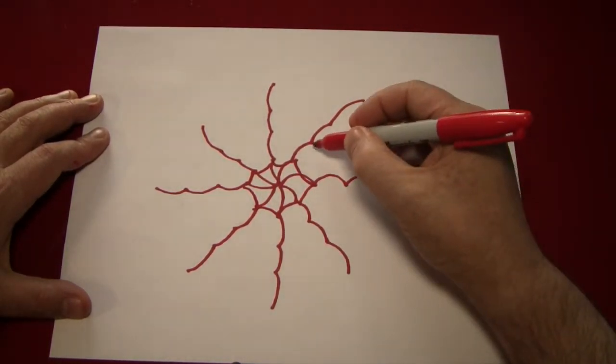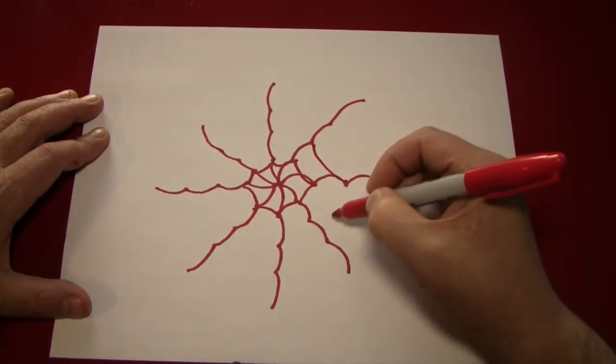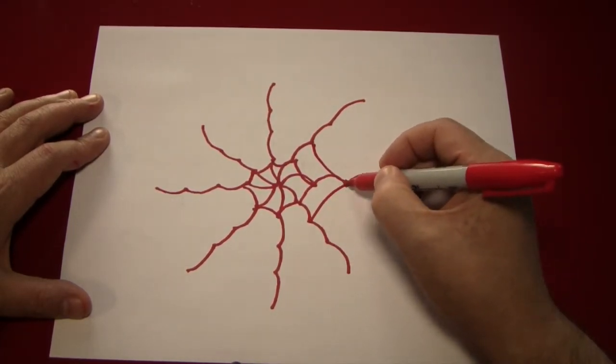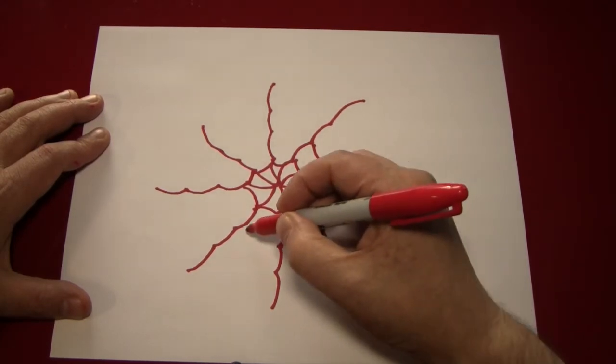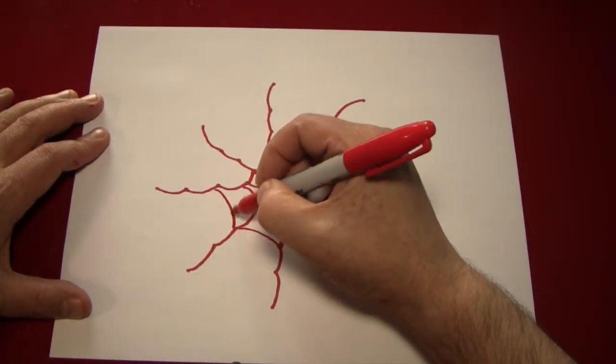So, you'll take a point like this one, connect it to that, do the same thing here, and go around the circle, go around the web.